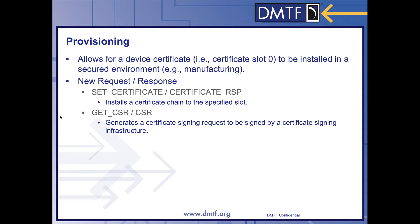SetCertificate and CertificateResponse installs the certificate chain to the specified slot. Whereas getCSR and CSR is for devices capable of generating a certificate signing request. The CSR is then signed by a certificate signing infrastructure.